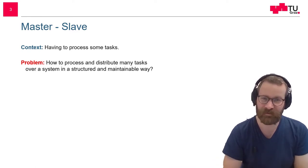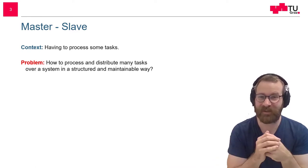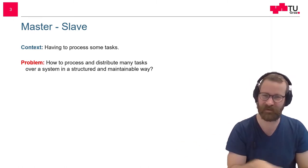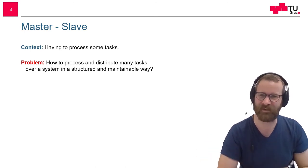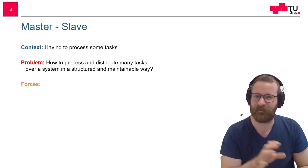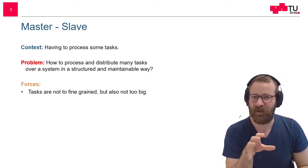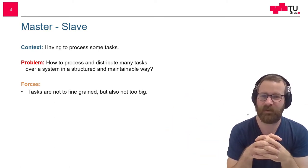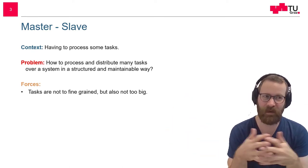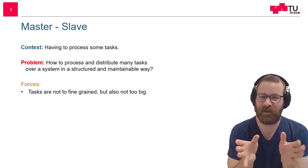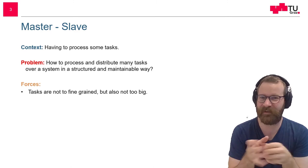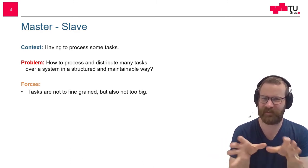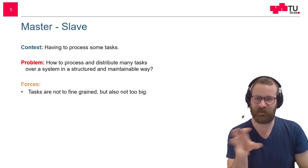How can we distribute them in a structured and maintainable way — not just randomly distributed over our system, but coordinated somehow. So what are the forces here? Sometimes tasks are very fine-grained, sometimes tasks are very big. In order to distribute them in a reasonable manner, they should have the right size and about equal size — that's important. If you have a mixture of many different sizes of tasks, it's difficult to distribute them.